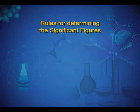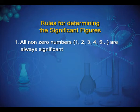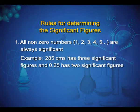There are certain rules for determining significant figures. The first rule is that all non-zero numbers like 1, 2, 3, 4, 5, etc. are always significant. Example: 285 cm has 3 significant figures and 0.25 has 2 significant figures.